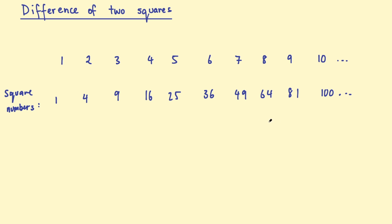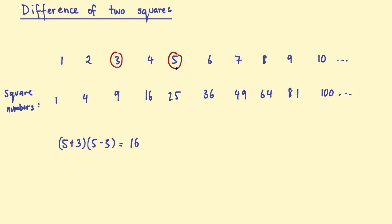These keep going into infinity. Now the difference of two squares says if we pick two counting numbers — let's pick some small ones, 5 and 3 — we can add those numbers together, so 5 plus 3, and then multiply that by the difference, 5 take 3. 5 plus 3 is 8, multiplied by 2, which is 5 take 3. 8 times 2 is 16. This is the same as squaring those numbers and finding the difference: 5 squared is 25, 3 squared is 9, and 25 take 9 is also 16.